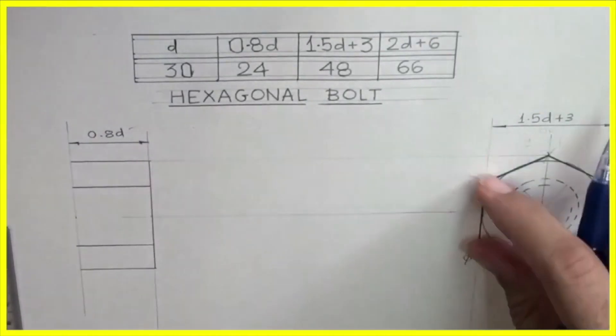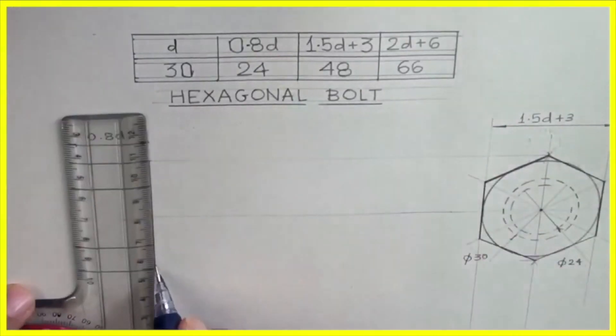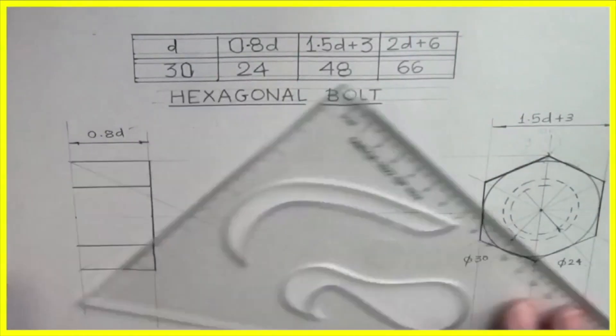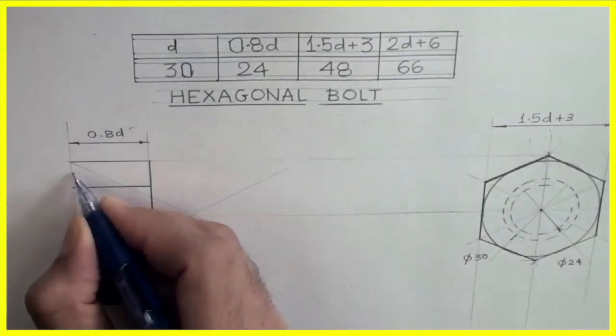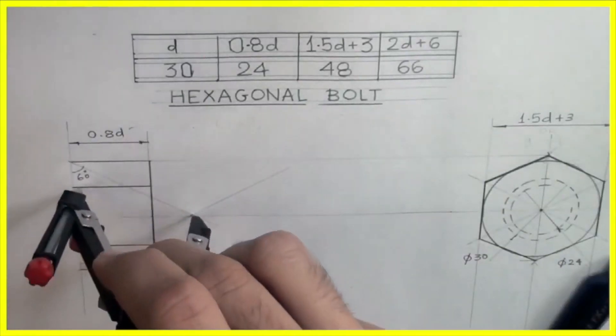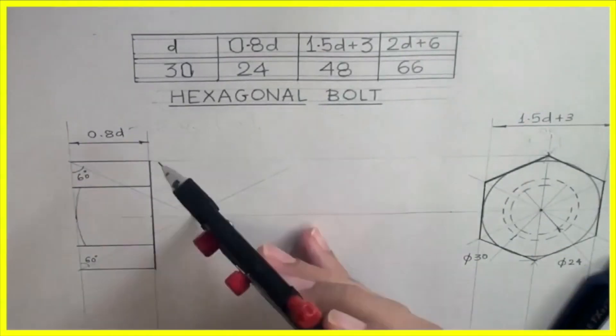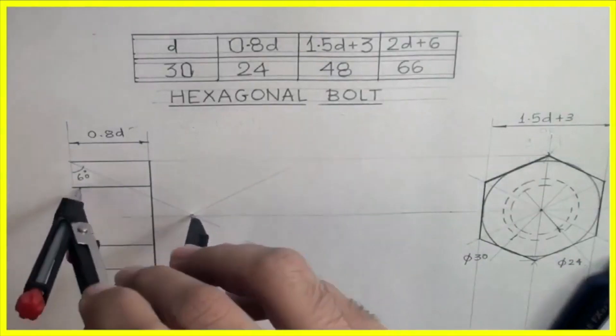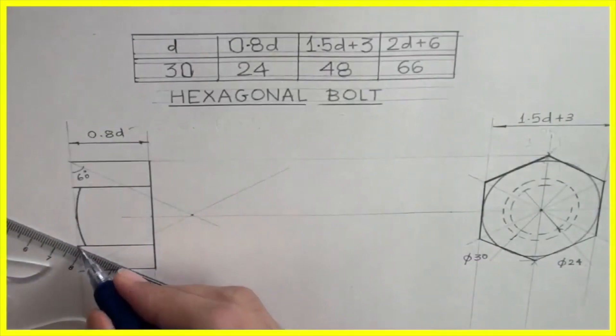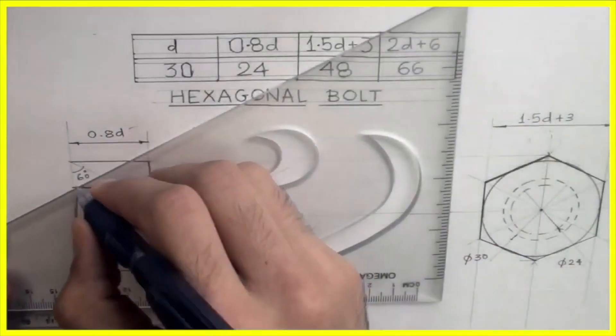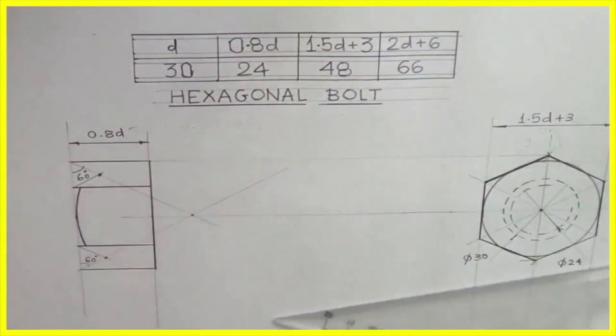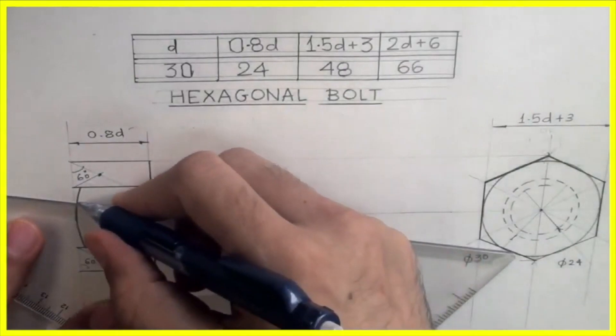Now we need to draw that curve. We will take 60 degree with vertical from both corners. Wherever it will cut, from that point to this distance we will draw radius. After that again we will take 60 degree with vertical. Wherever it will cut, from that point we draw the radius.